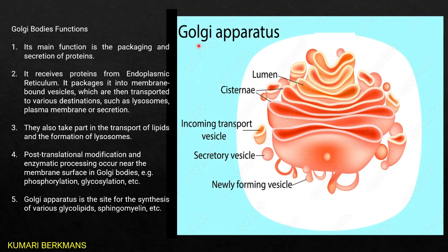The next organelle is the Golgi apparatus. Its function is protein synthesis as well as lipid packaging — it packs lipids and proteins and sends them to various parts of the body. The structure of the Golgi apparatus is the cisternae, which is a tubular structure. If you cut it open there is a lumen inside. It forms small vesicle-like structures which detach from the Golgi apparatus and move freely — these are called secretory vesicles. Inside these vesicles, proteins or lipids are packed and sent to various parts of the body.